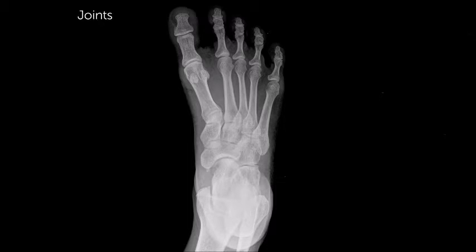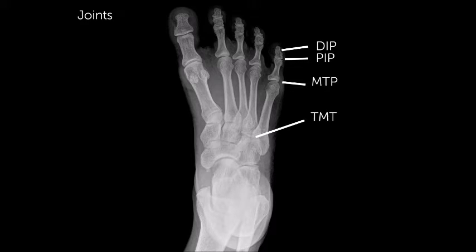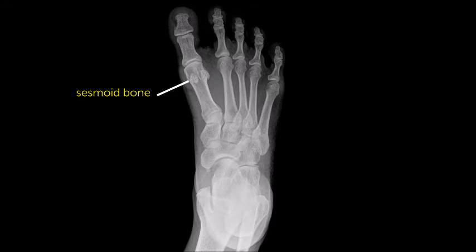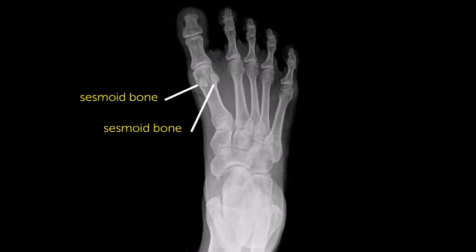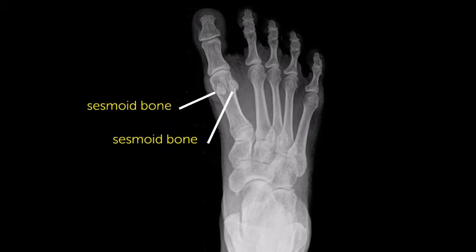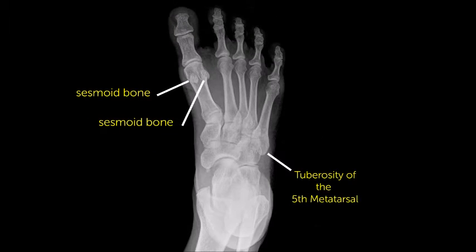Joints of the foot include distal and proximal interphalangeal joint spaces for the second through fifth digits, as well as metatarsal-phalangeal and tarsal-metatarsal joints. Recognize that the first digit has only one interphalangeal joint space. Other radiographically pertinent anatomy includes sesamoid bones and the tuberosity of the fifth metatarsal. The central ray for an AP foot x-ray is directed at the base of the third metatarsal.